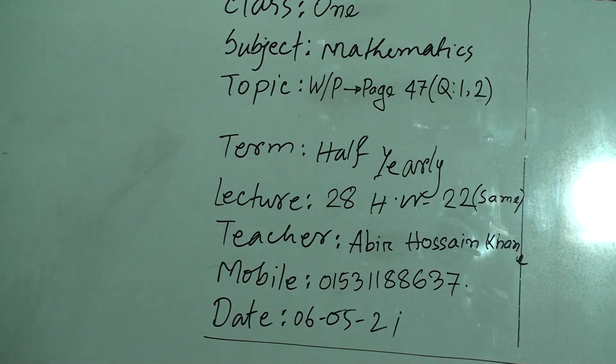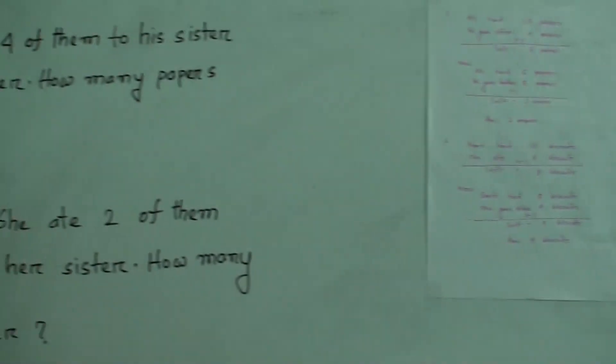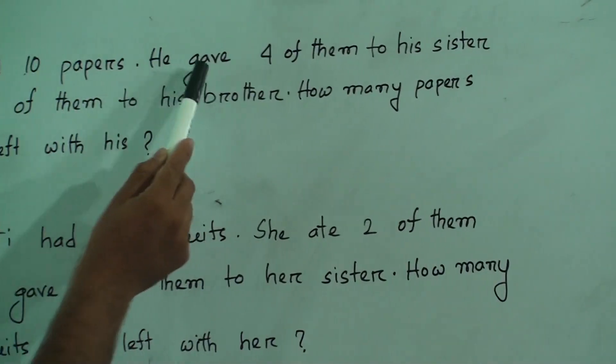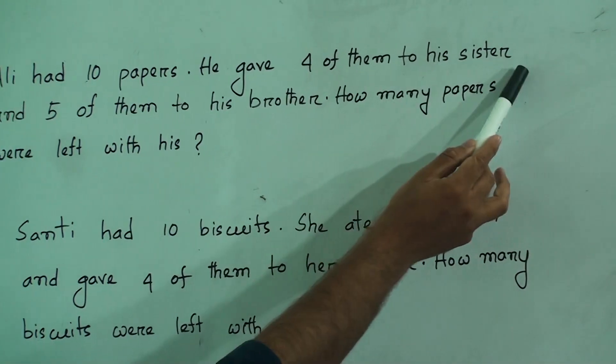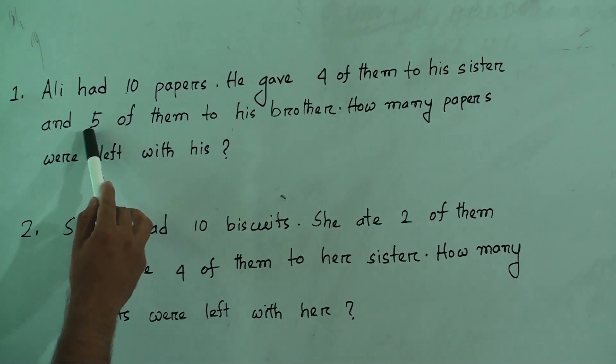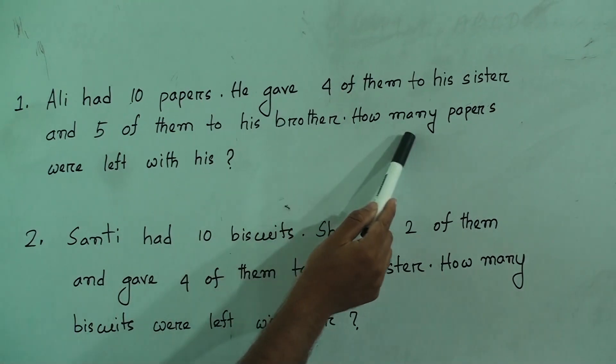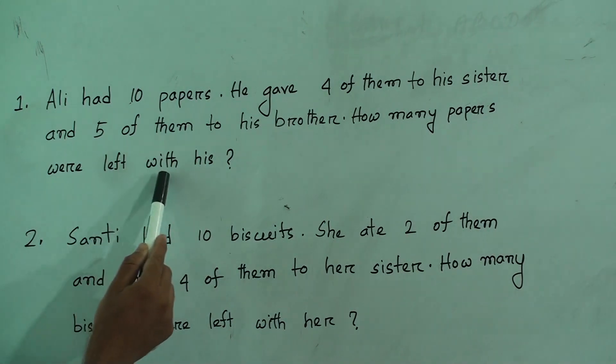Now my dear students, let's start our class. Question 1: Ali had 10 papers. He gave 4 of them to his sister and 5 of them to his brother. How many papers are left with him?